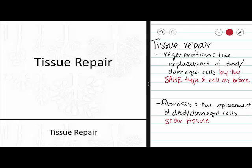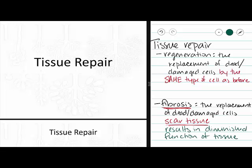In cirrhosis of the liver, your liver becomes increasingly fibrous because you are replacing your dead or damaged cells with scar tissue instead of with healthy cells that are meant to be in your liver. Because of this, fibrosis is going to result in diminished function of that tissue, whereas regeneration is going to restore your tissue to normal function.